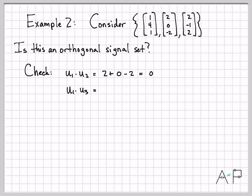u1·u3. I get 2. 4 times -1 is -4. 1 times 2 is 2. And I get 0 again. 2 + 2 is 4, minus 4 is 0. So u1 and u3 are orthogonal to each other.